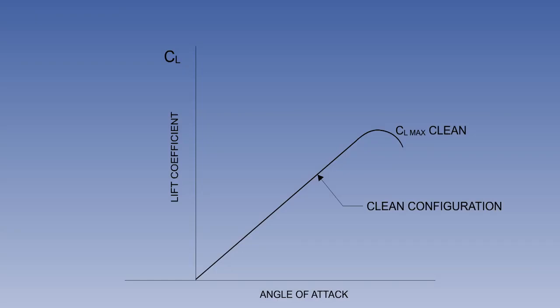When we compare the lift curve of a clean wing, that is, with all high lift devices up, with that of the same wing with flaps down, it can be seen that the lift curve moves up and to the left. This has the effect of increasing CL Max, and slightly reducing the critical angle and the angle of attack for any given lift coefficient.